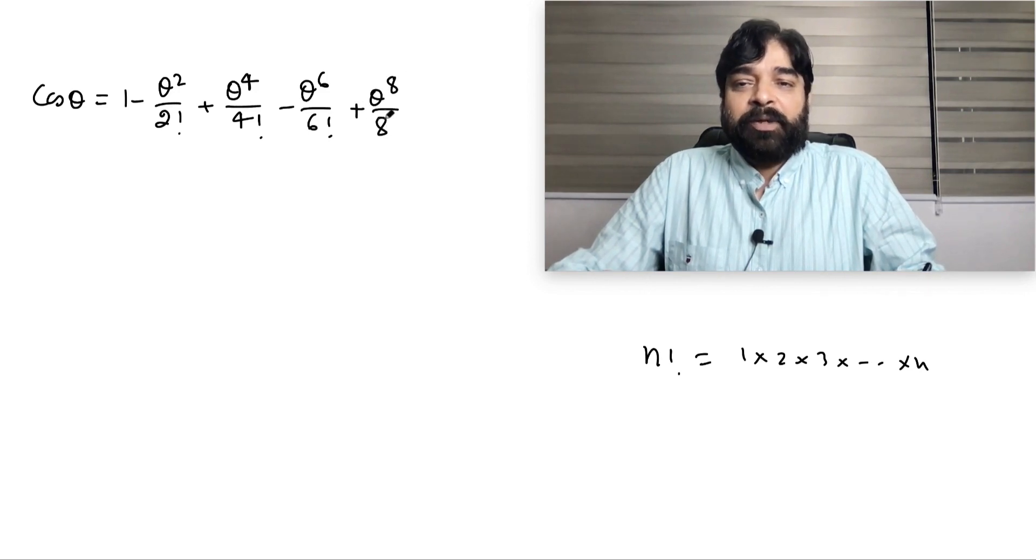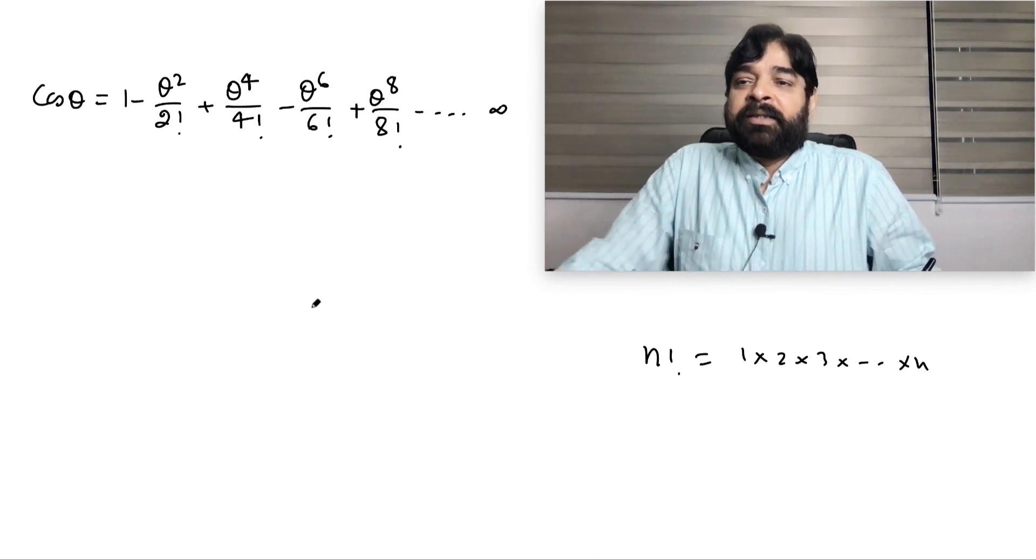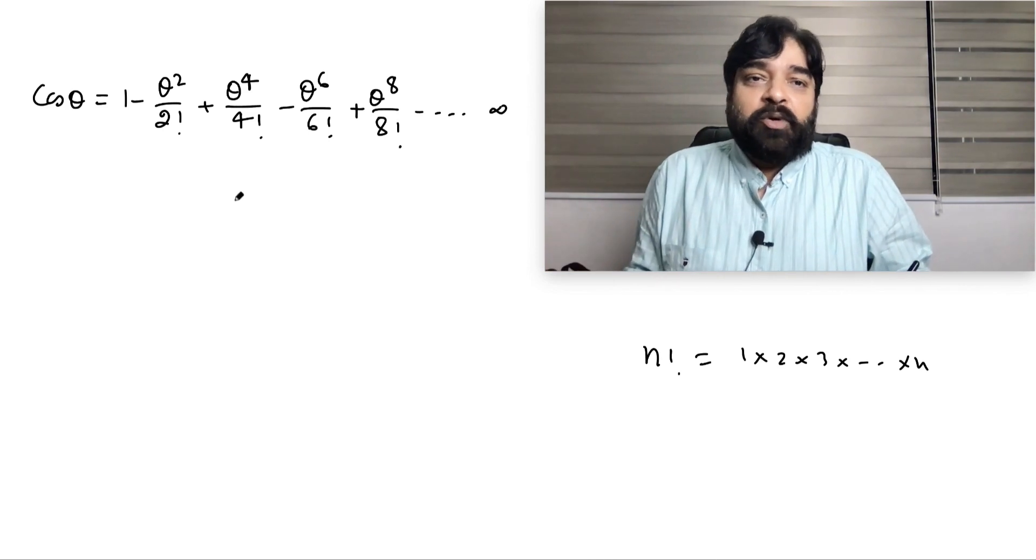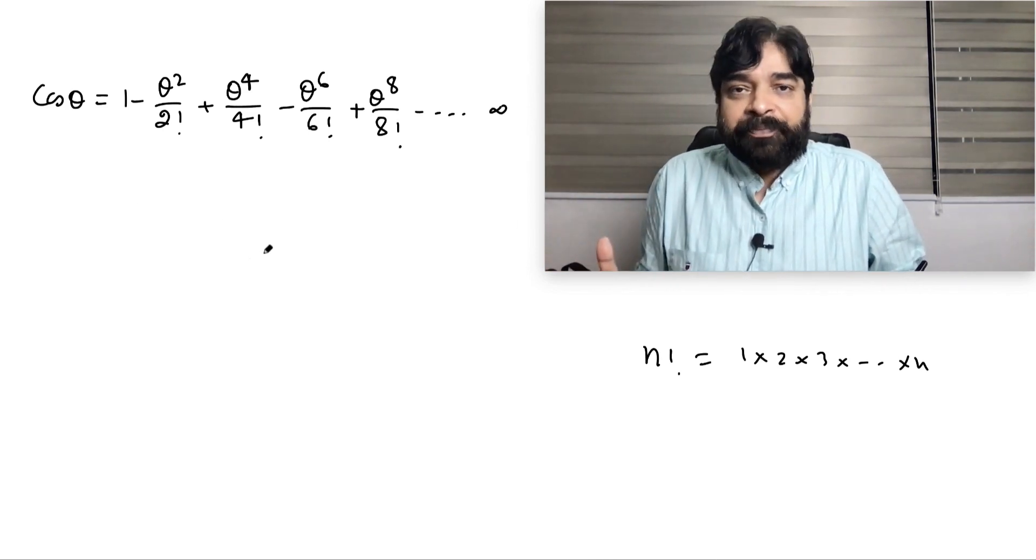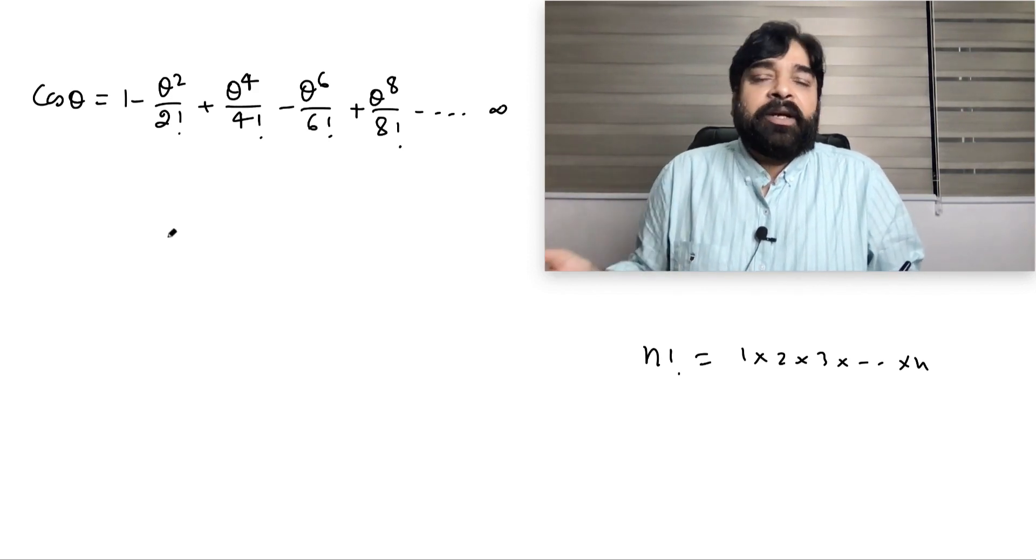Now you understood the pattern: minus θ² plus θ⁴ minus θ⁶, the next will be plus θ⁸ / 8!, and this will continue up to infinity. This is the value of cos θ in terms of θ. Same way sin θ is there, tan θ also you can write, everything you can write in terms of θ.